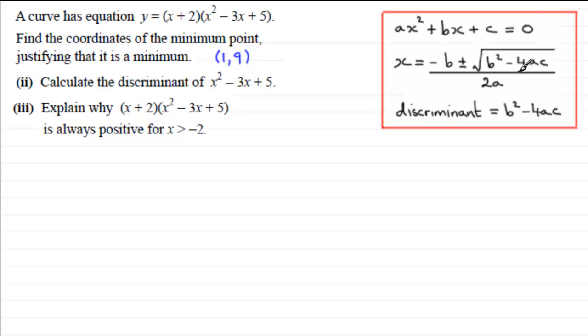That's our way of working out part two. The discriminant equals b squared minus 4ac. We can see that b, the coefficient of x, is minus 3, so it's going to be minus 3 all squared.